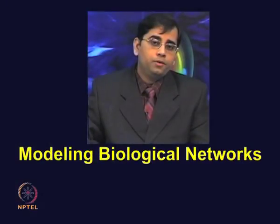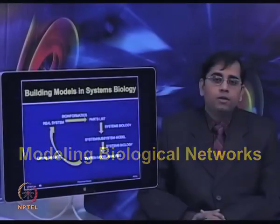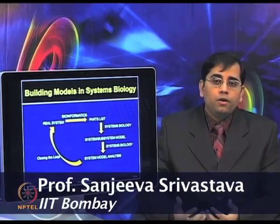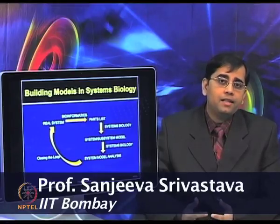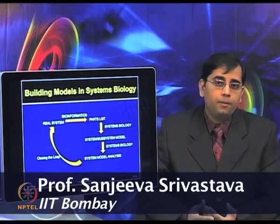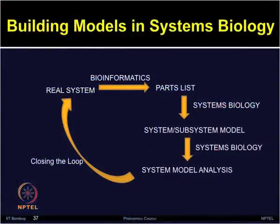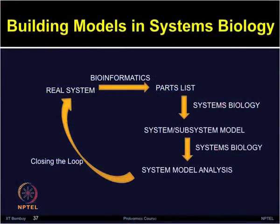Let us now talk about how to model the biological networks. To build a model in systems biology, first a parts list can be generated using data sets derived from systems biology approaches. The systems or subsystems model can be generated and used for systems model analysis. This can be applied to real systems, and by applying knowledge using bioinformatics tools, it can be applied back to the original components to derive hypotheses and validation, working like a closed loop.